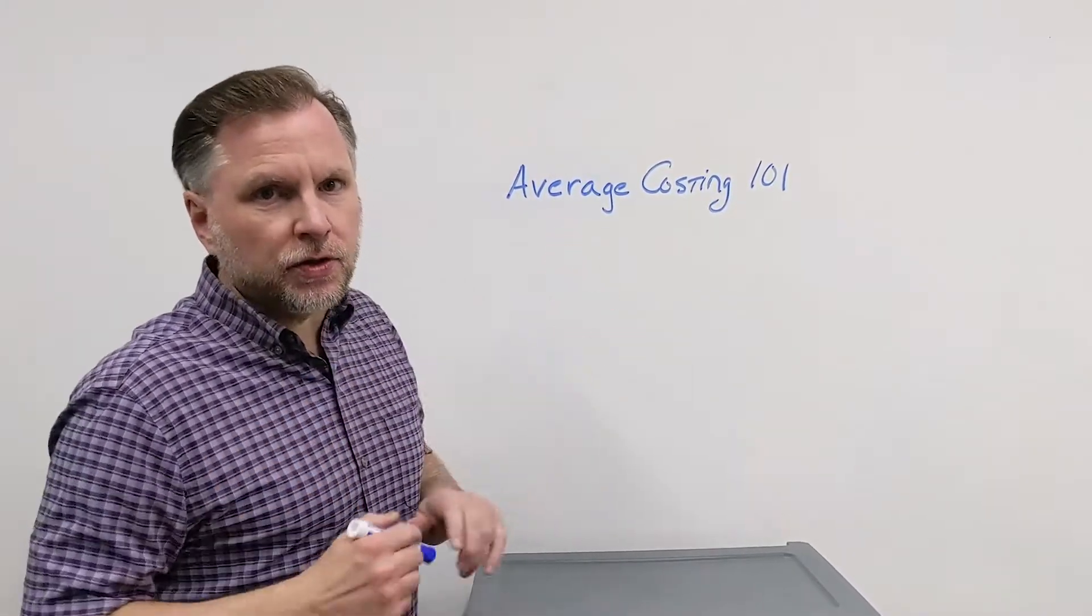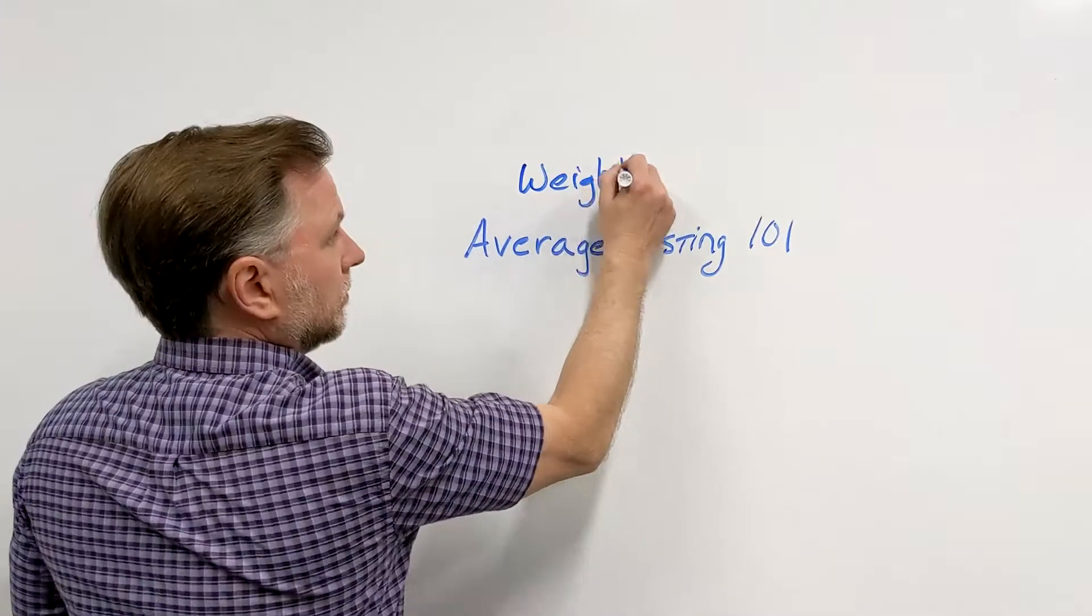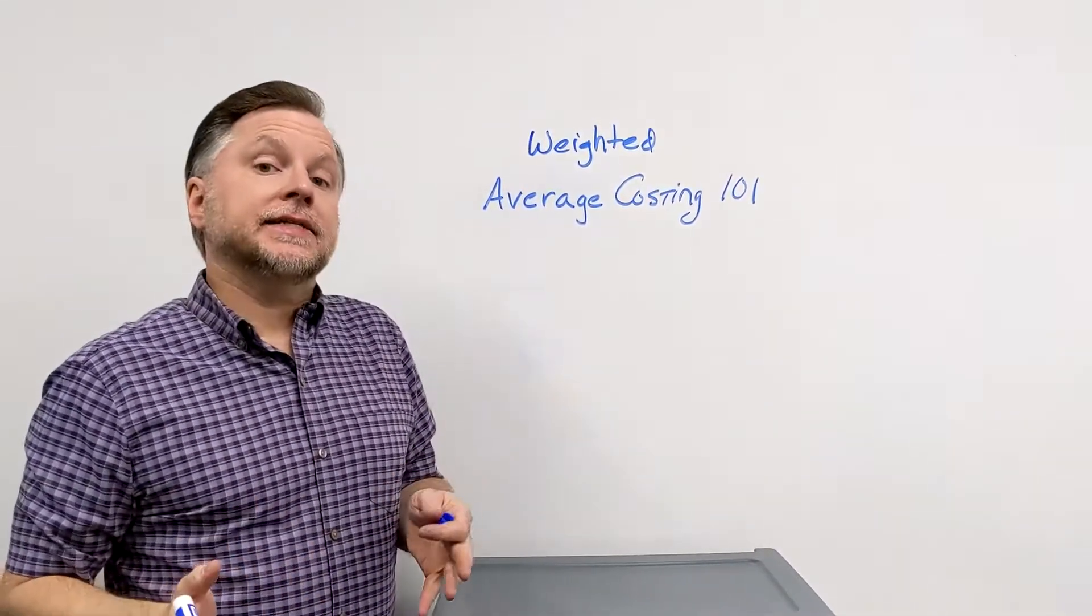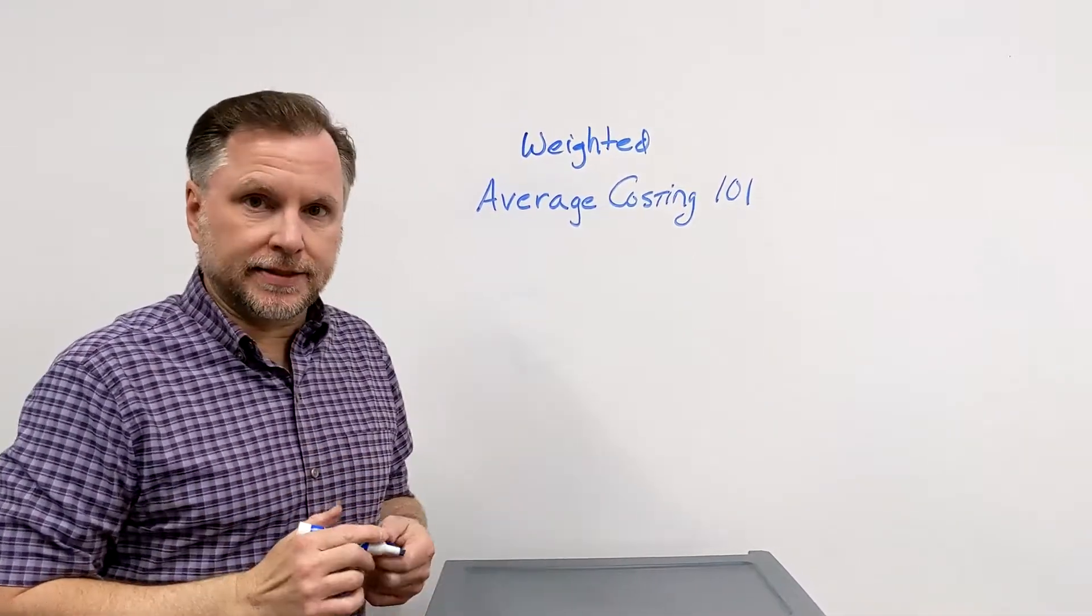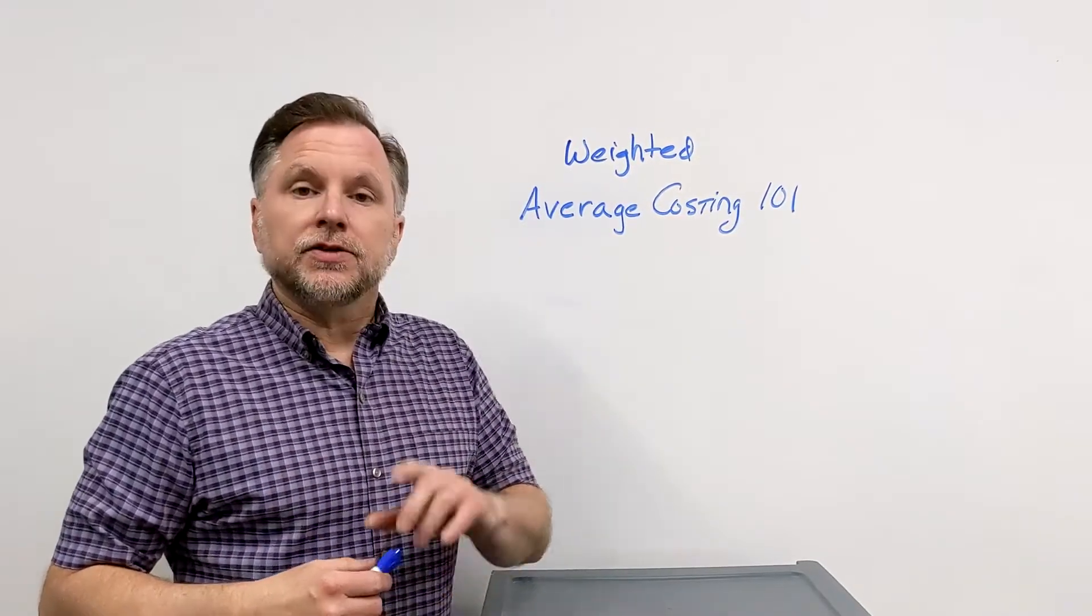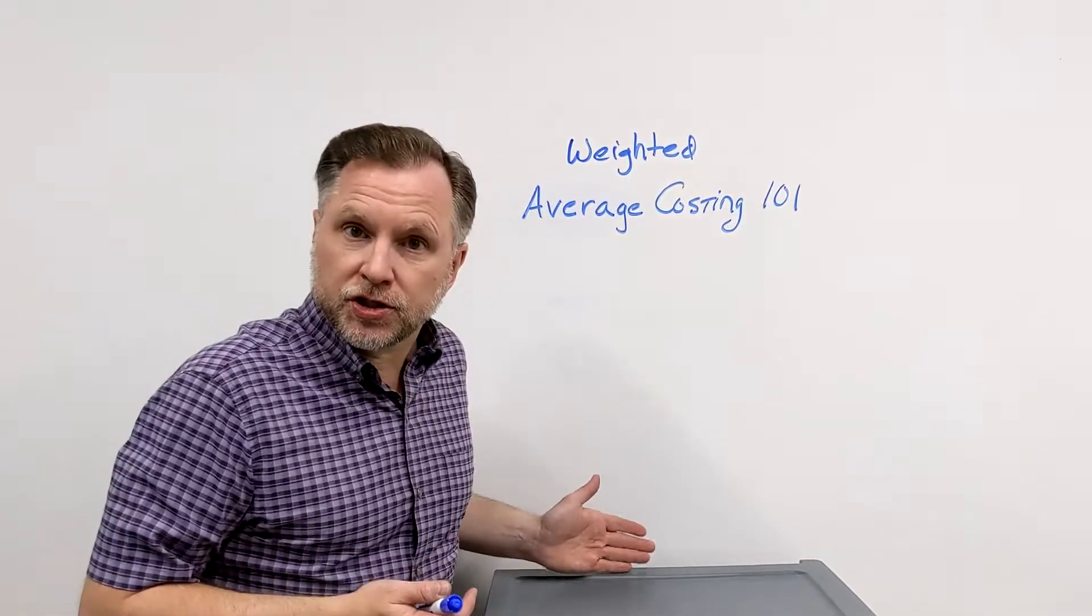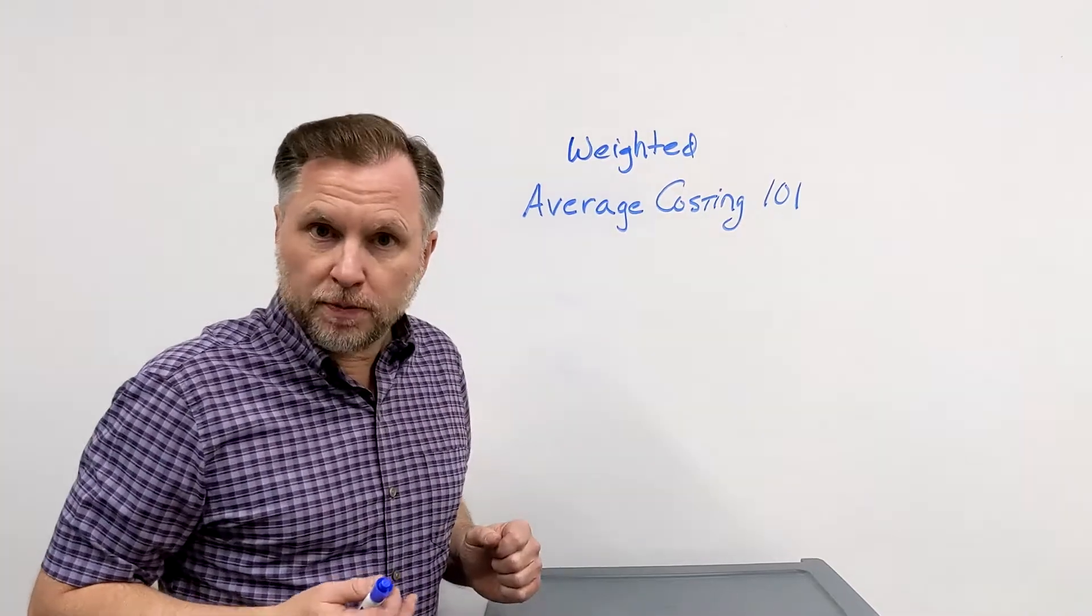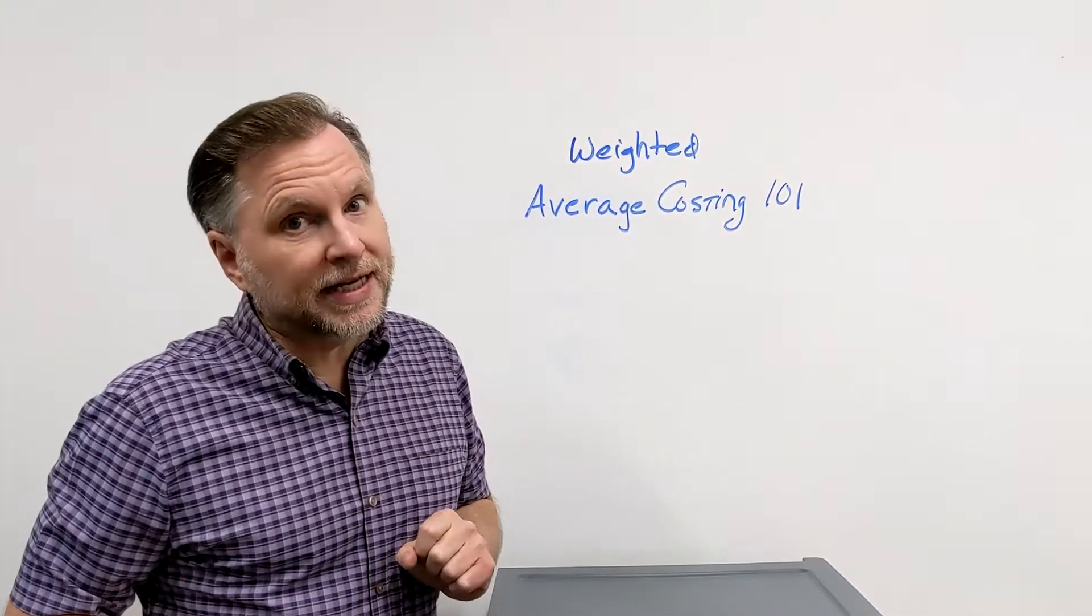So average costing is also called weighted average costing. Weighted average means it takes into account the quantities. Today we're going to do a very simple method of that. So first we're going to start out with our store. We're going to open an adult beverage store. So we've got to go buy some inventory.